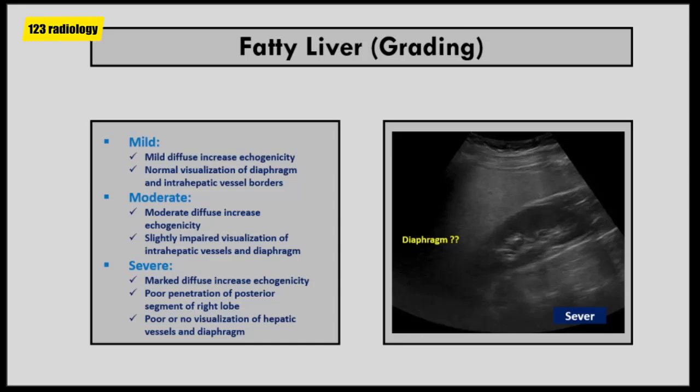As you can see in this case, the posterior segment of the right lobe and the diaphragm are not visualized. Special attention should be given to patients with severe fatty liver — focal hepatic lesions are difficult to visualize due to posterior attenuation. CT is recommended for solving unclear cases.